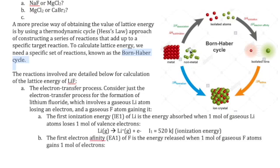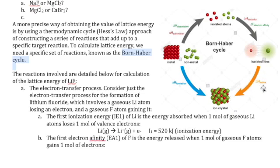To break apart the metals, we take them from solid to gas state — that's a sublimation process. For the non-metals, we take them from diatomic form into monoatomic atoms, which means breaking a covalent bond; the energy for that is called the bond dissociation enthalpy. Then we make them into ions: the metal is made into a cation using ionization energy, and the non-metal is made into an anion using electron affinity. Once they form ions, they combine together to form the ionic compound, and that energy is the lattice energy.